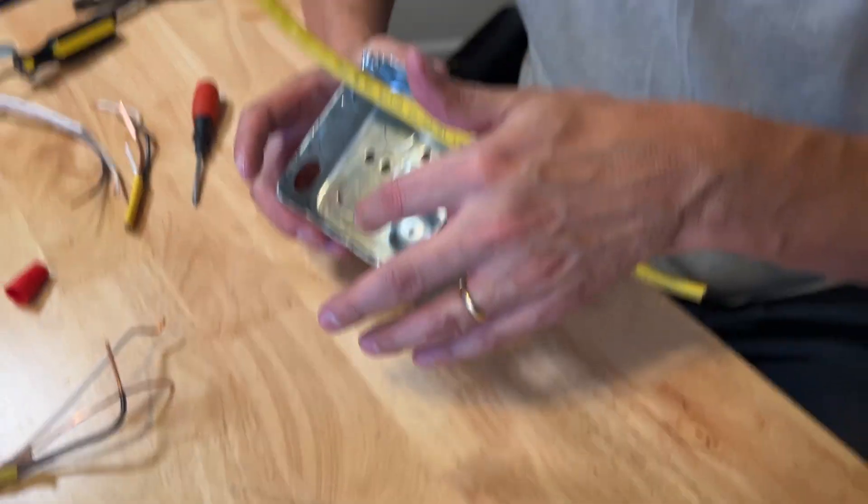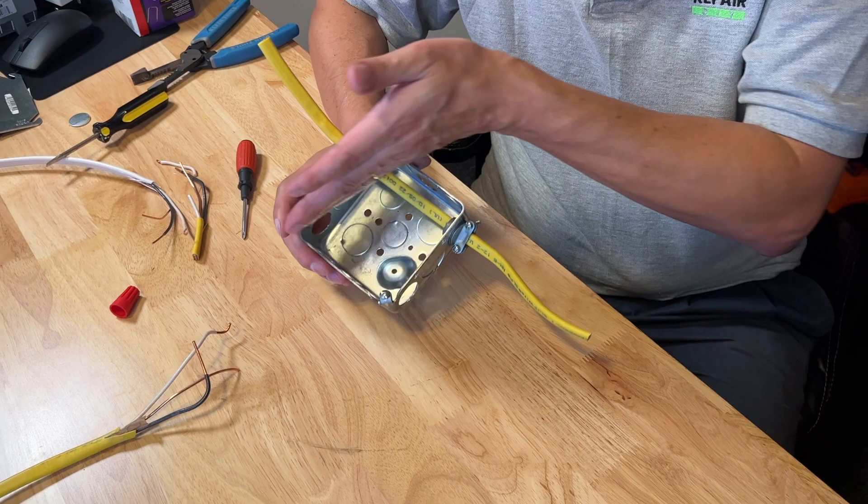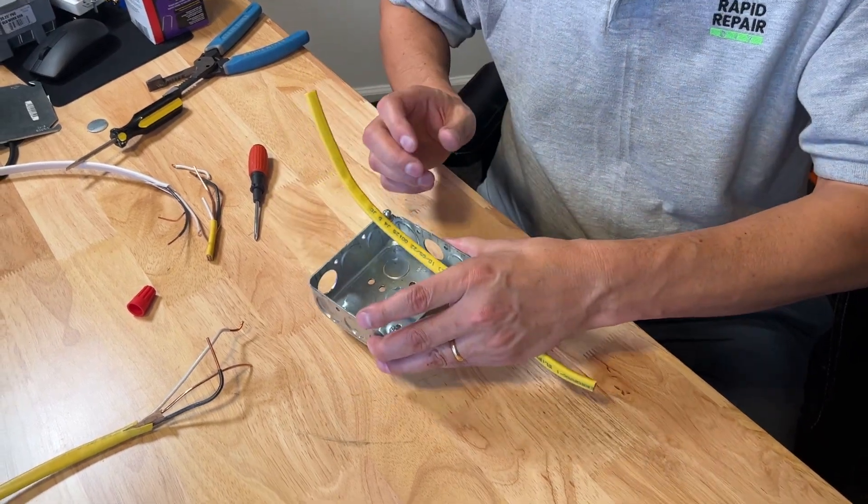This is called a four by four gang box. It is used for two duplex receptacle outlets or two switches.